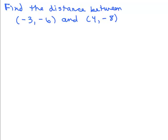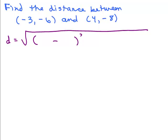Here's the first problem: find the distance between (-3, -6) and (4, -8). We want to set it up. D equals — make sure you put that radical sign pretty long. You're going to put parentheses with a minus sign squared, plus another parentheses with a minus sign squared. Put the video on pause and try this: simplify inside each parenthesis, square those numbers, add them, then simplify the square root if possible.